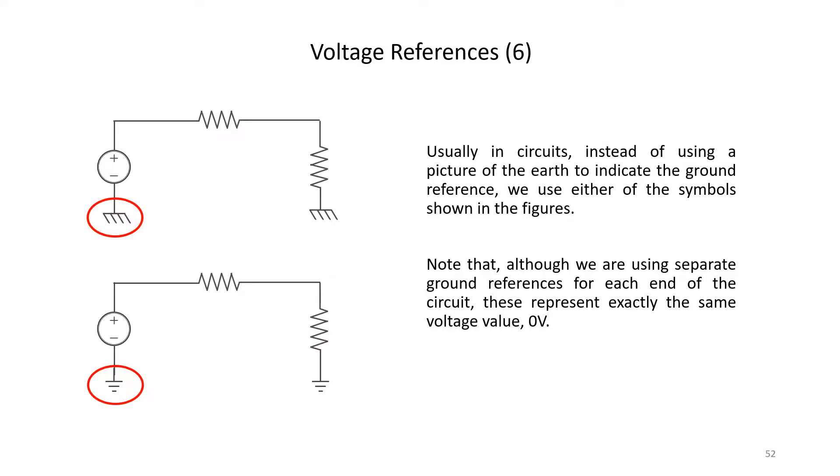In circuits, instead of using the picture of the earth to indicate a ground reference, we use one of the two symbols which are shown in the figure here. You can see that in these circuits as well I've used two separate ground references for each end of the circuit, but they represent exactly the same reference voltage of zero volts.